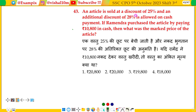An article is sold at a discount of 25%, and an additional discount of 28% is allowed on cash payment. If Ravindra purchased the article by paying ₹10,800 in cash, then what is the marked price of the article?